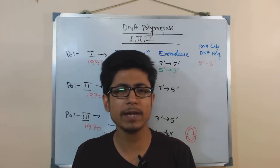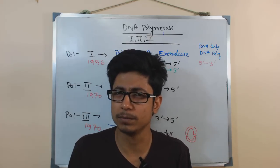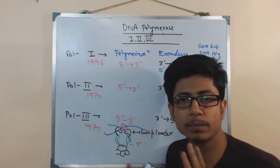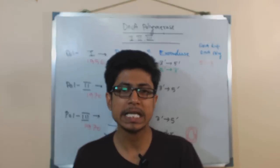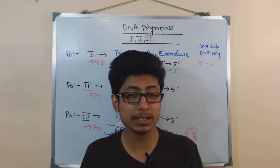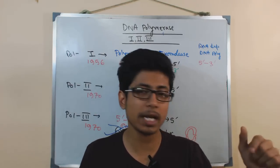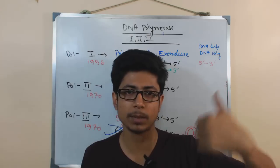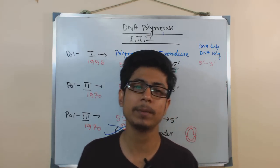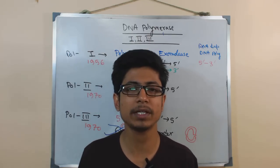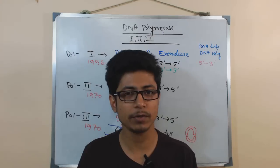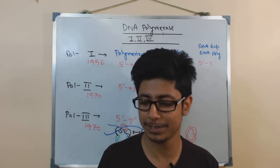Later, many other polymerases such as polymerase 4 and 5 were discovered, but they are not as important as polymerase 1 and 3, which are the two major polymerases found in prokaryotes. If you liked the video, don't forget to subscribe and like the channel, and put any questions in the comments. Thank you very much for watching.